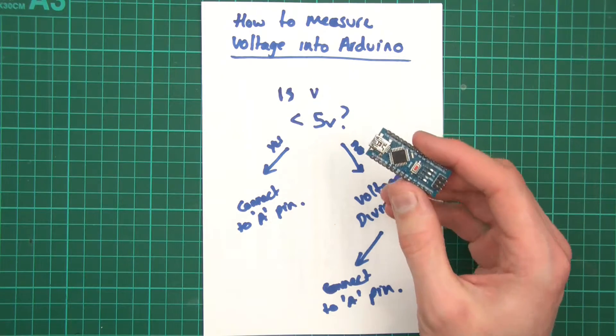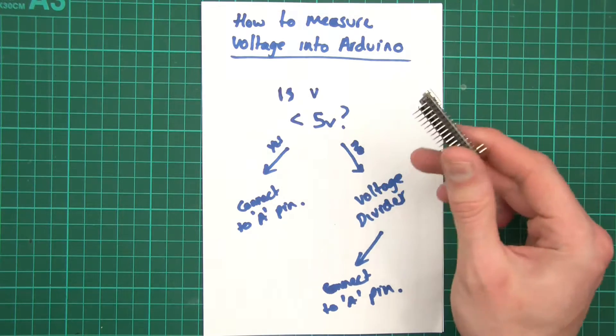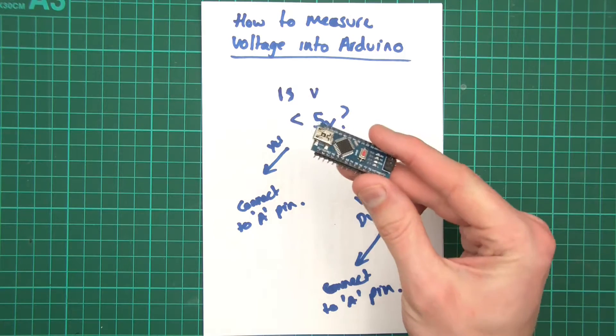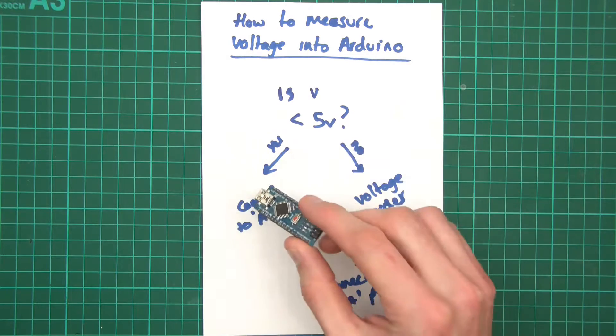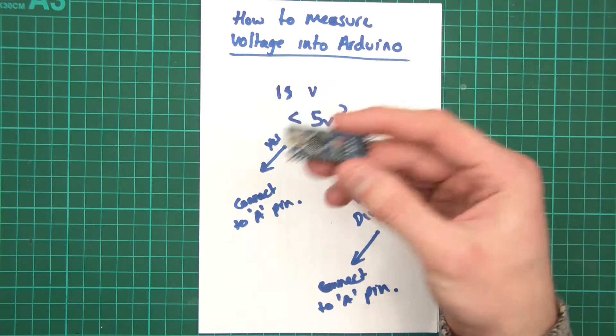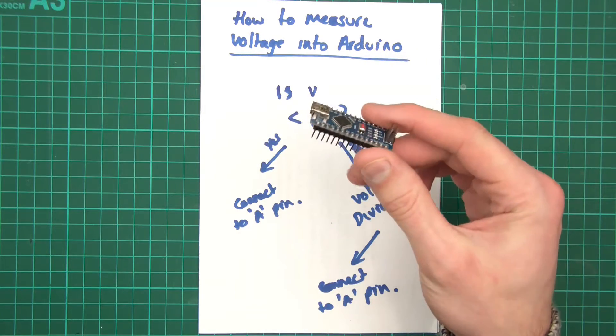So if you've got 5 volts output from a sensor, or a battery, or whatever, and you want to read it into an Arduino, it's fairly easy. You connect it to an analog pin, and then you do the code, like I said last week. Easy, right?